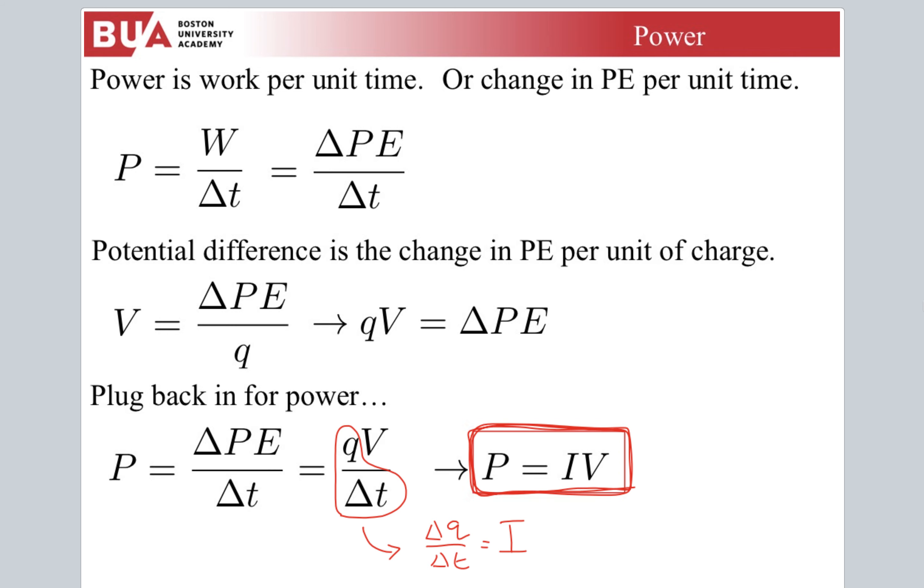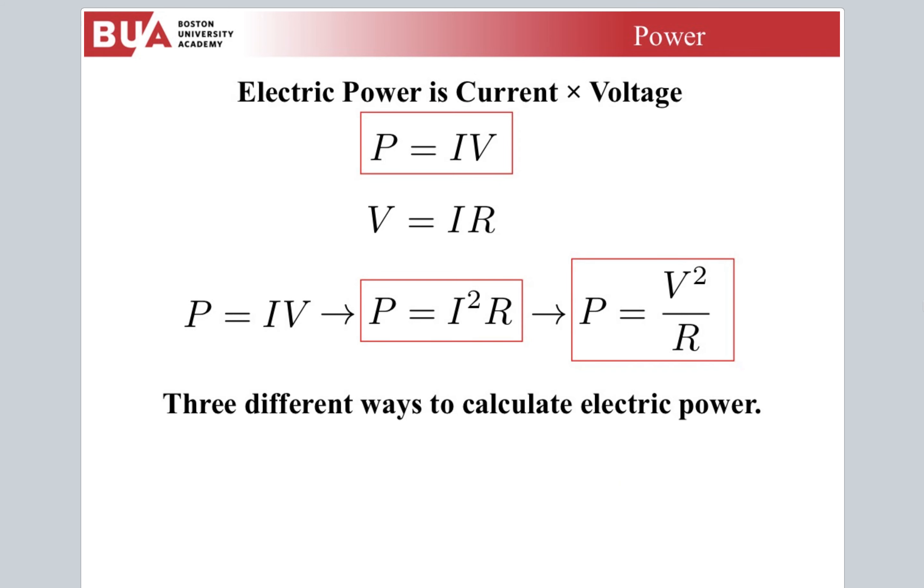Electric power is current times voltage. If we make use of the other very important equation, Ohm's law, V equals IR, we can write it three different ways. I only remember these two and I derive the rest on the fly. I remember P equals IV and V equals IR. I always start with those two. I feel like doing the math, simple algebra on your paper is easier than trying to memorize all these things.